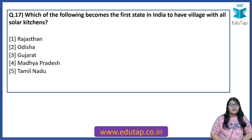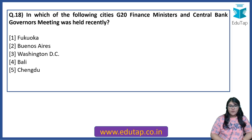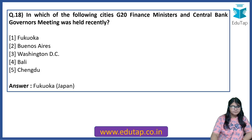Which of the following has become the first state in India to have a village with all solar kitchens? The answer is Madhya Pradesh — specifically Bancho village in Betul district. In which of the following cities was the G20 Finance Ministers and Central Bank Governors meeting held recently? The answer is Fukuoka, Japan.